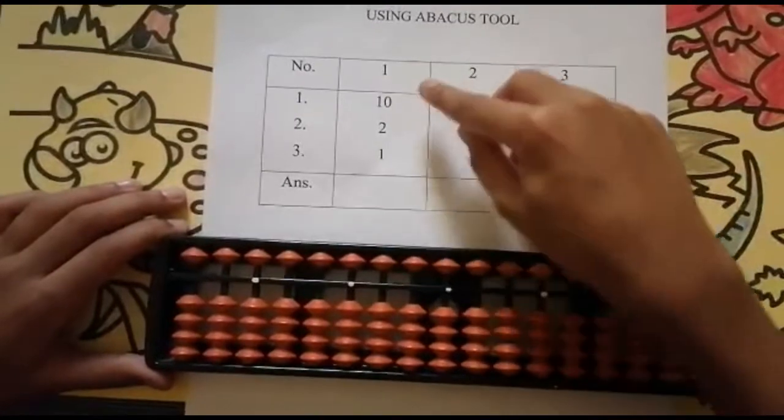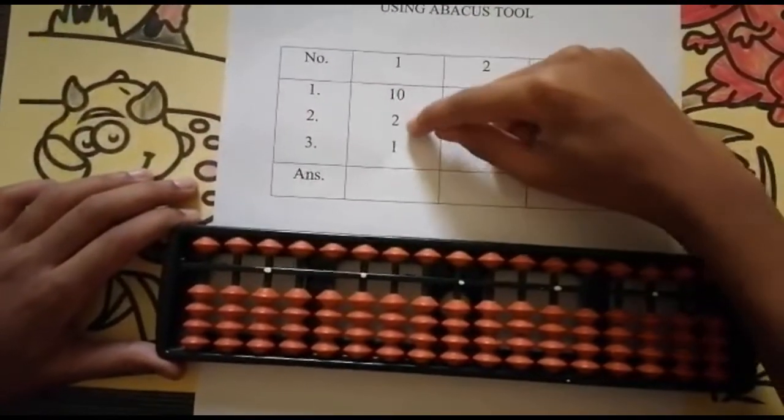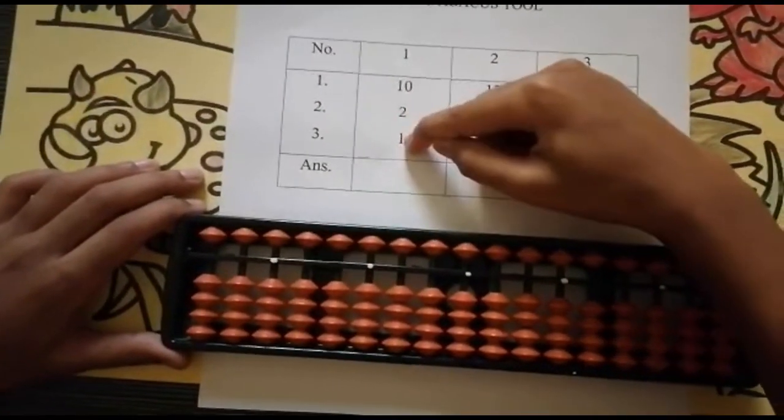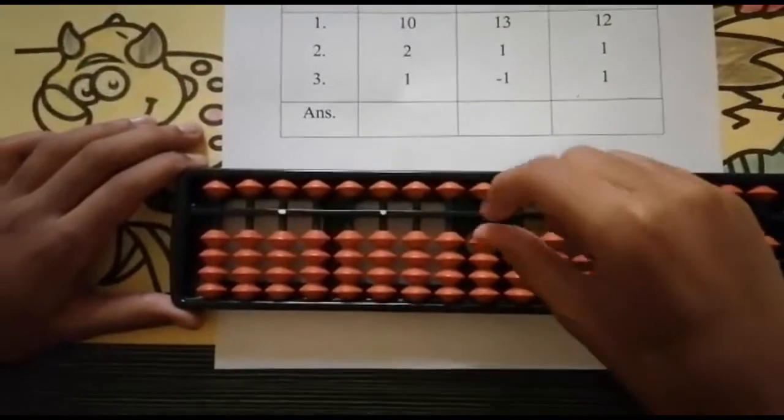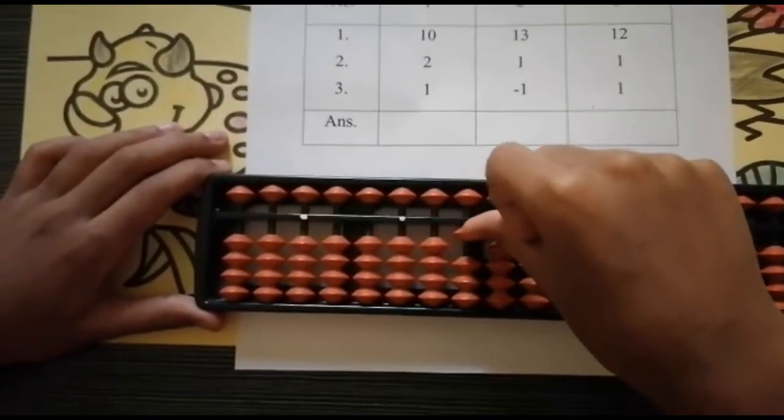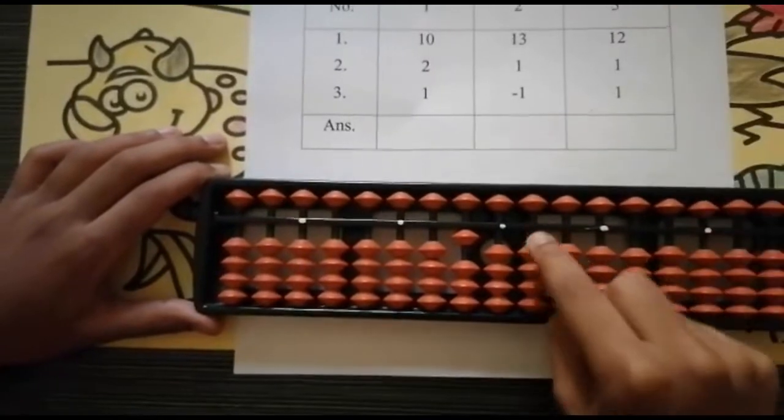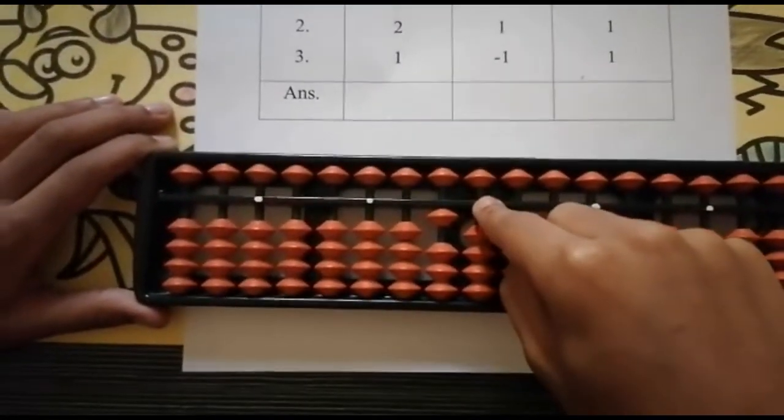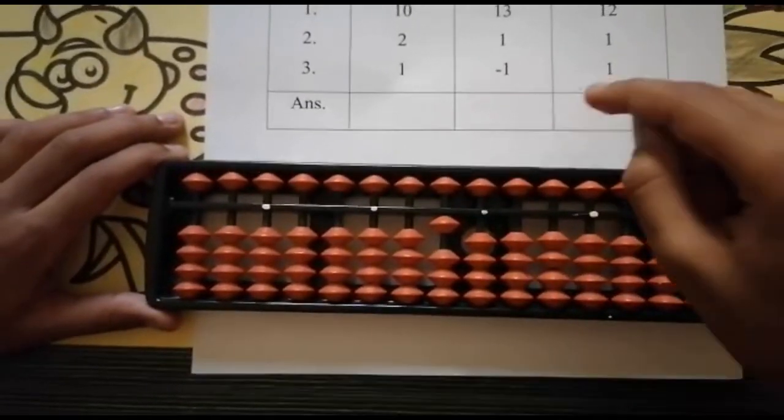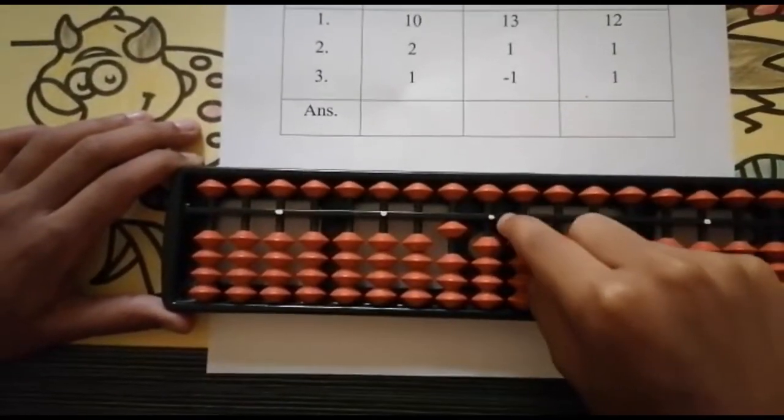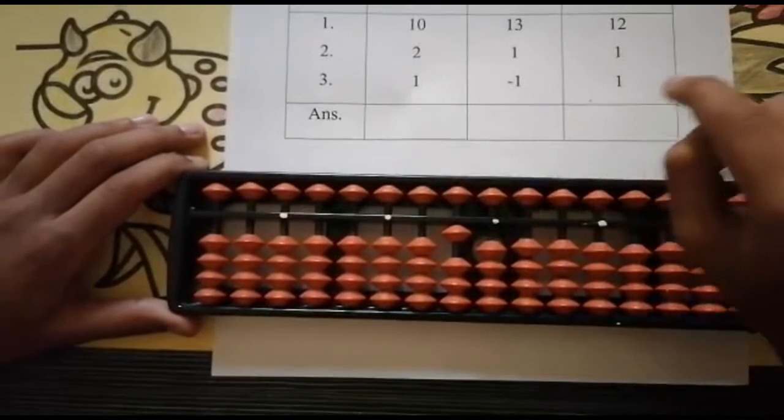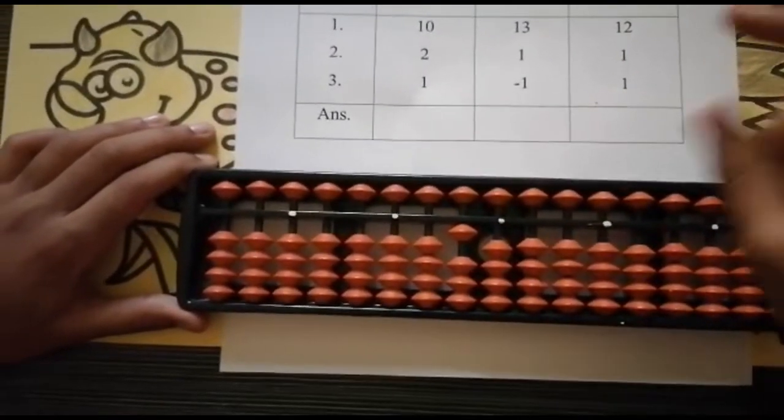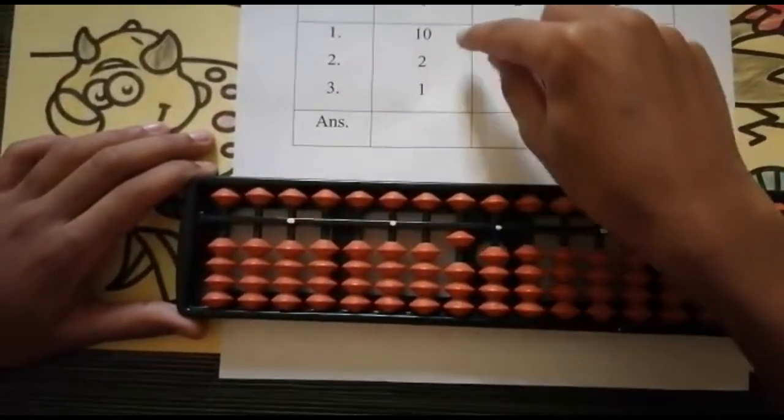The first sum is 10 + 2 + 1. Now we need to add 10 in the tens place. See, there is no bead touching here, so that means the value is zero. I hope you all remember that if no bead is touching the rod, the value is zero. So we have added 10.